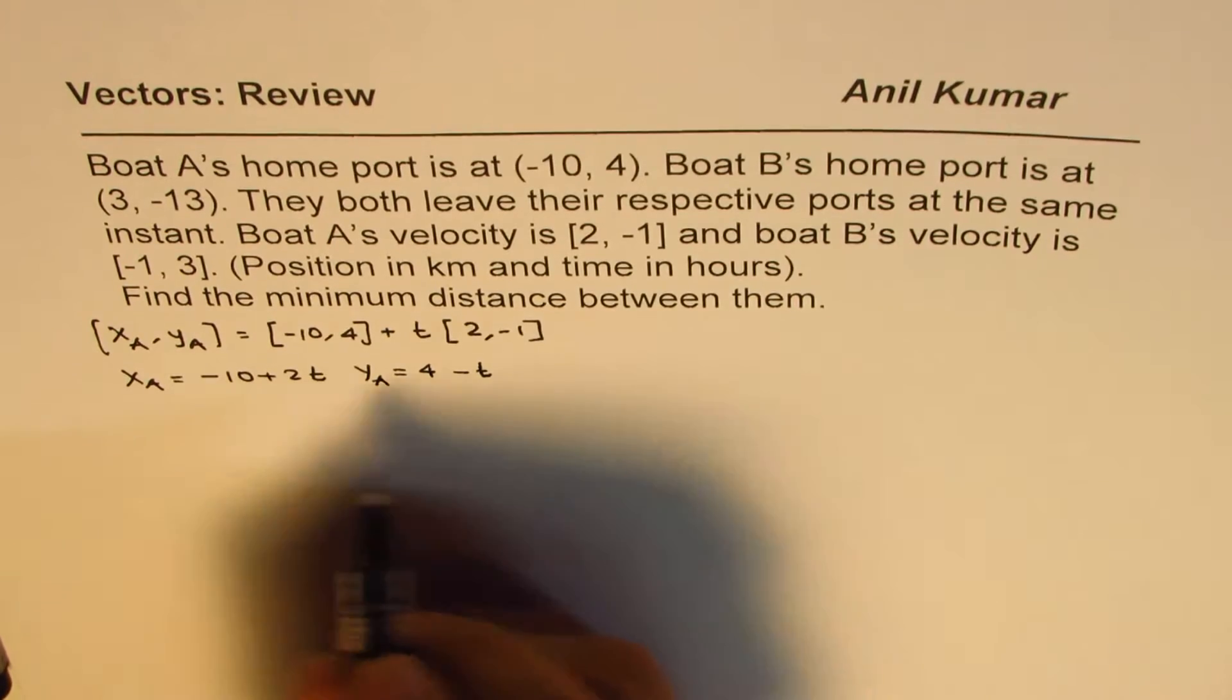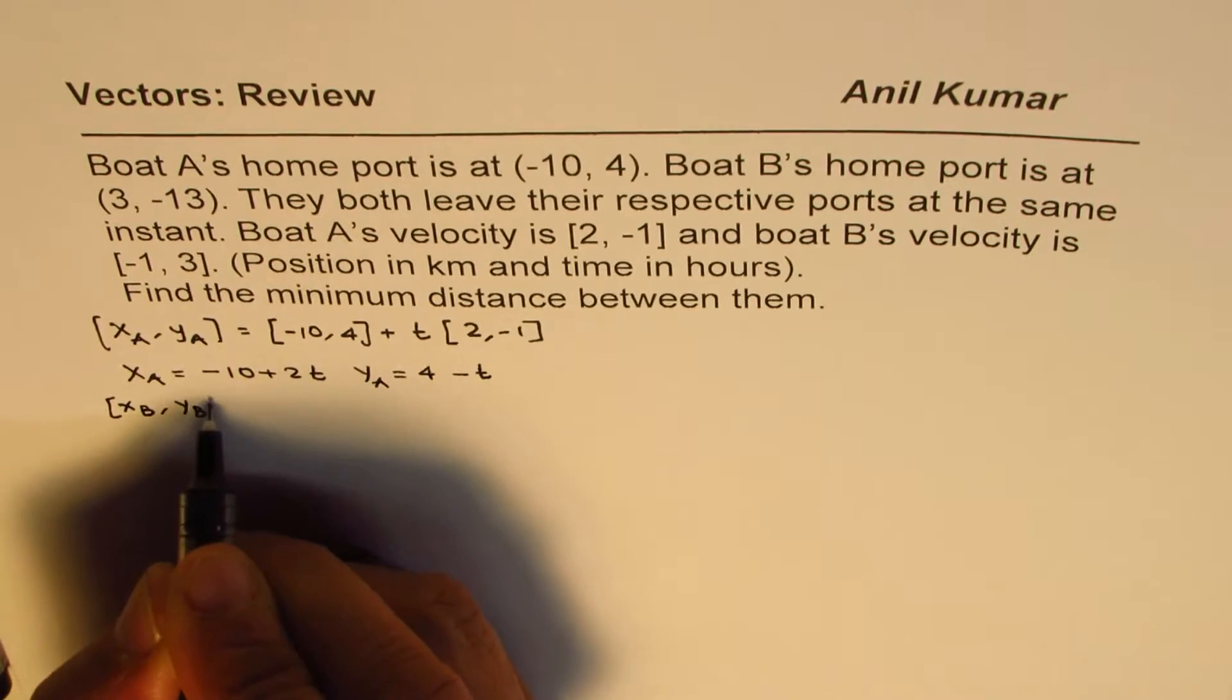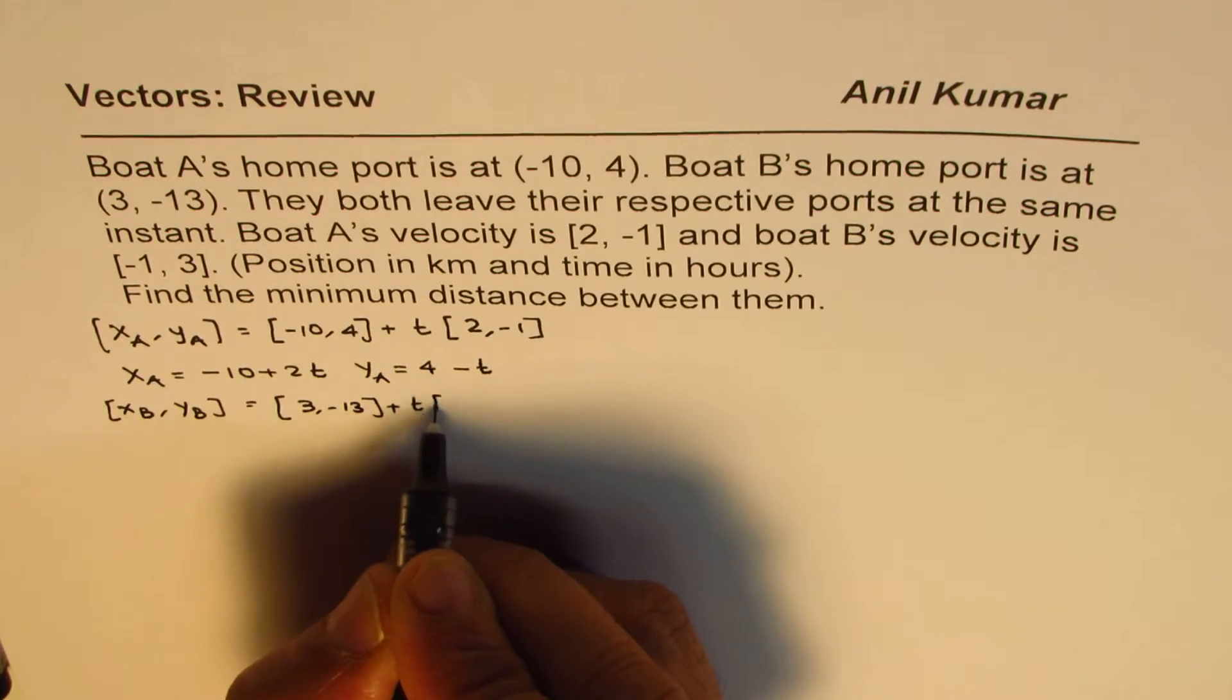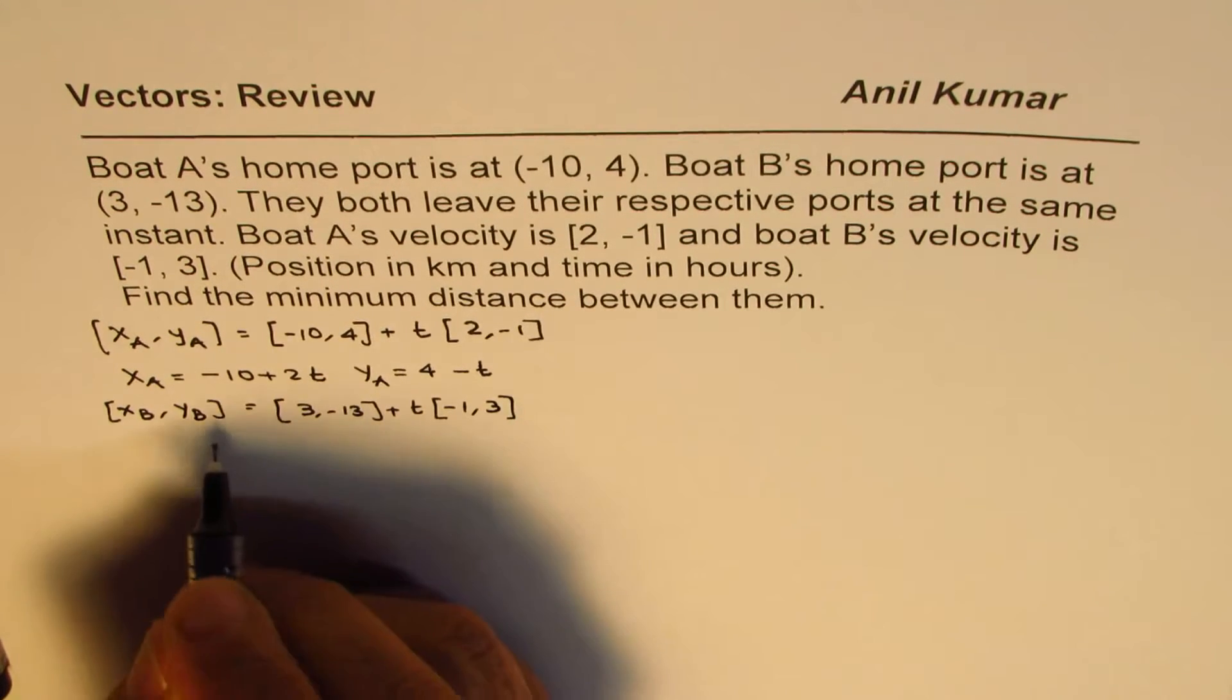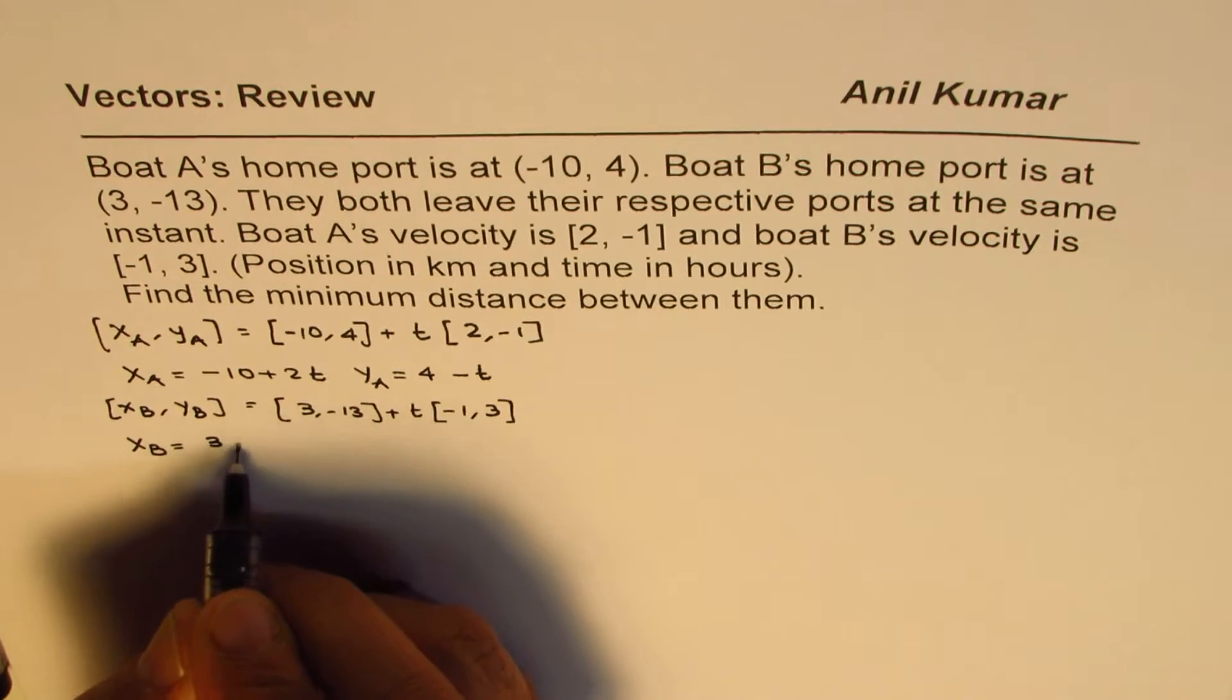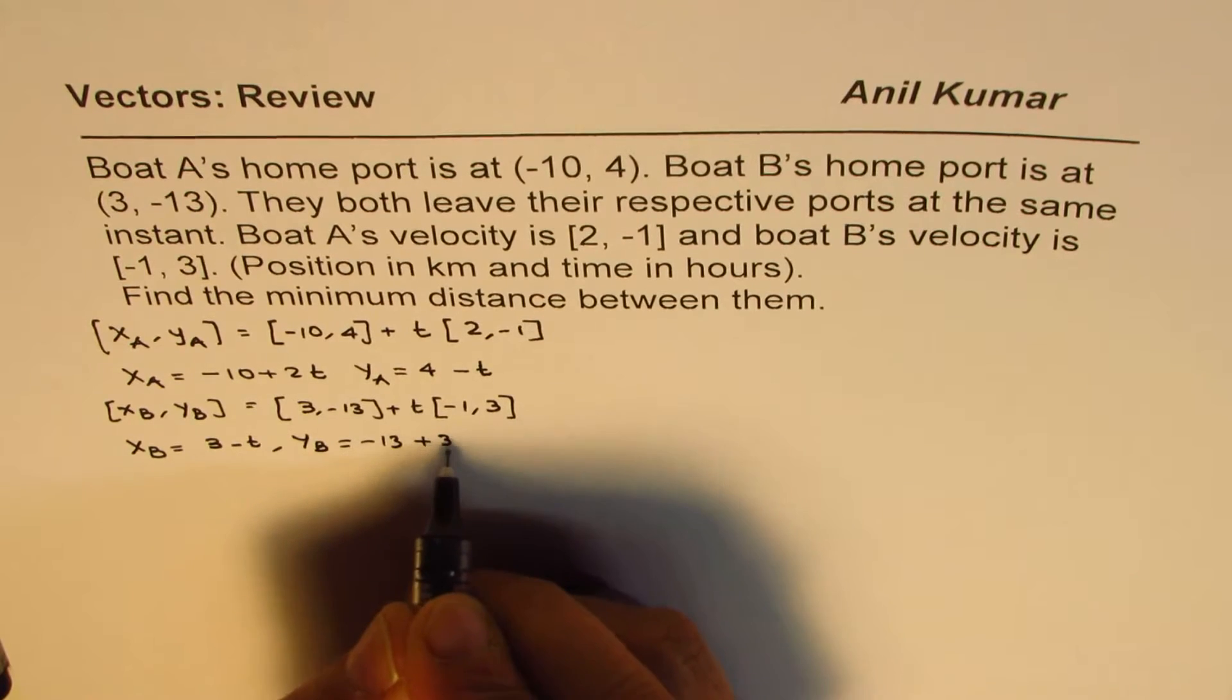Now let's look into the other boat which is boat B. xB, yB can be written as initial position which is (3, -13) plus t times velocity which is (-1, 3). So its position can be written as xB equals 3 - t and yB equals -13 + 3t.